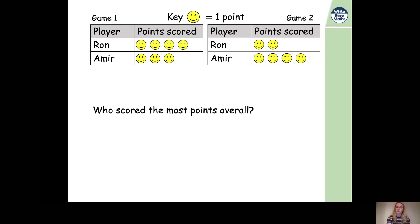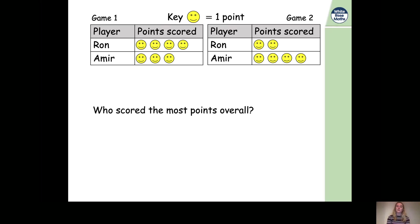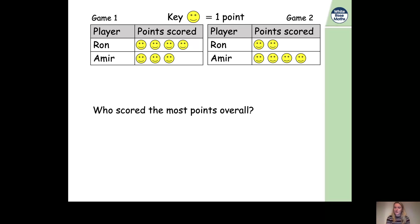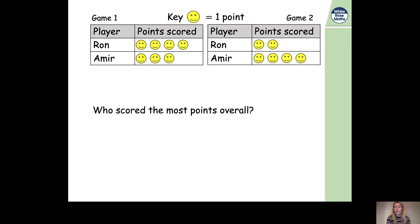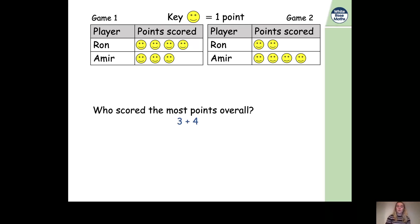In the first game Amir has three smiley faces next to his name. If one smiley face represents one point, three smiley faces represent three points — the first smiley face is one, the second two, and the third three. So he scored three points in the first game. In the second game he has four smiley faces, which means he scored four points because each smiley face is one point. So we need to do three plus four.